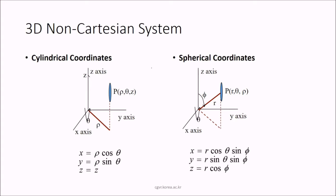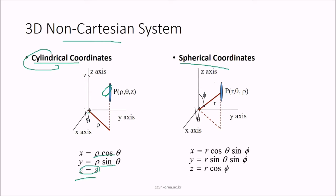In the 3D non-Cartesian system, we can use cylindrical coordinates where any point is represented as (ρ, θ, z): x = ρ·cos(θ), y = ρ·sin(θ), z = z. In spherical coordinates, a point is represented by (r, θ, φ): x = r·cos(θ)·sin(φ), y = r·sin(θ)·sin(φ), z = r·cos(φ), where φ is the phi angle, θ is the theta angle, and r is the distance.